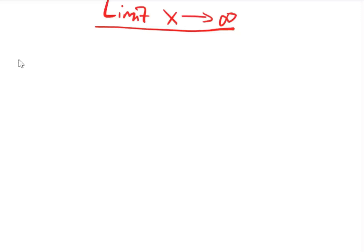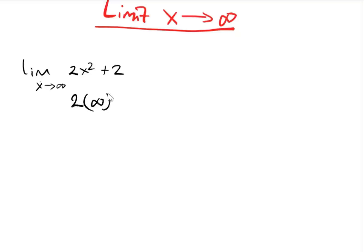Assuming we have a limit as x tends to infinity of 2x squared plus 2. For us to solve this we are going to use direct substitution — I substitute into 2x squared plus 2 and this gives us 2, so the final answer is 2 and this is the limit.